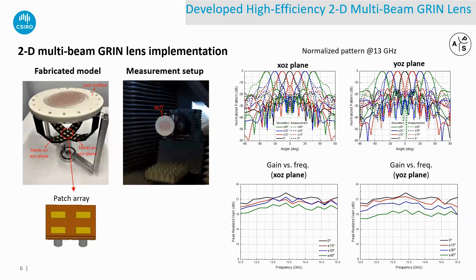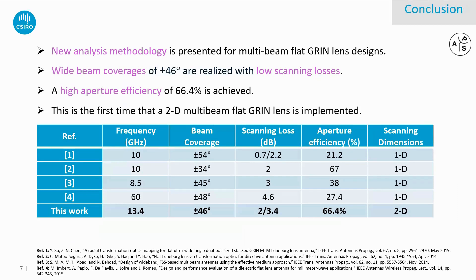In the final implemented model, a microstrip patch array antenna has been utilized as the feed source in order to save space. By using the new analysis method, a wide beam coverage has been achieved with low scanning losses for multi-beam flat GRIN lens. A high aperture efficiency of up to 66% has been obtained. Also, to the authors' best knowledge, this is the first time that a 2D multi-beam flat GRIN lens has been implemented.